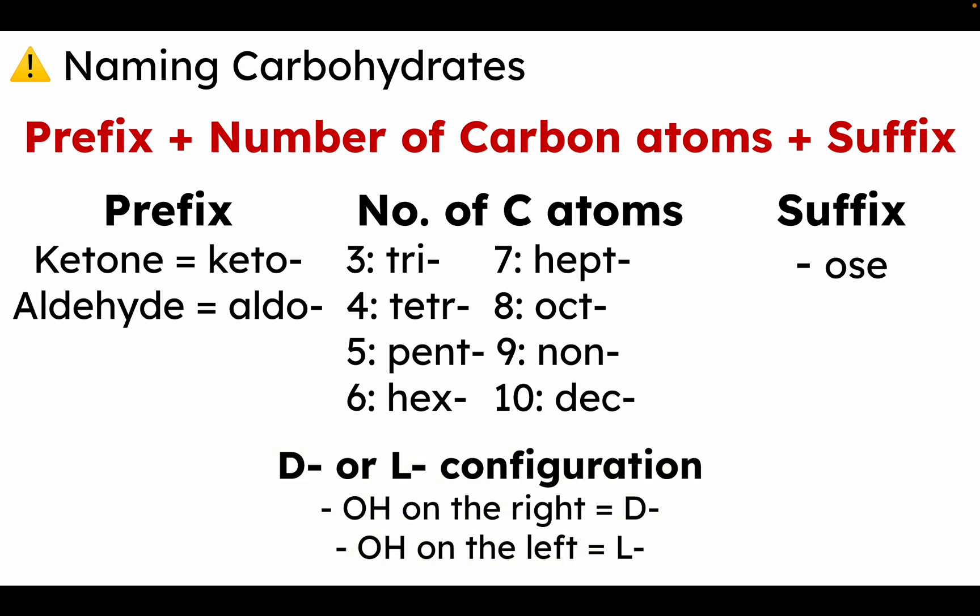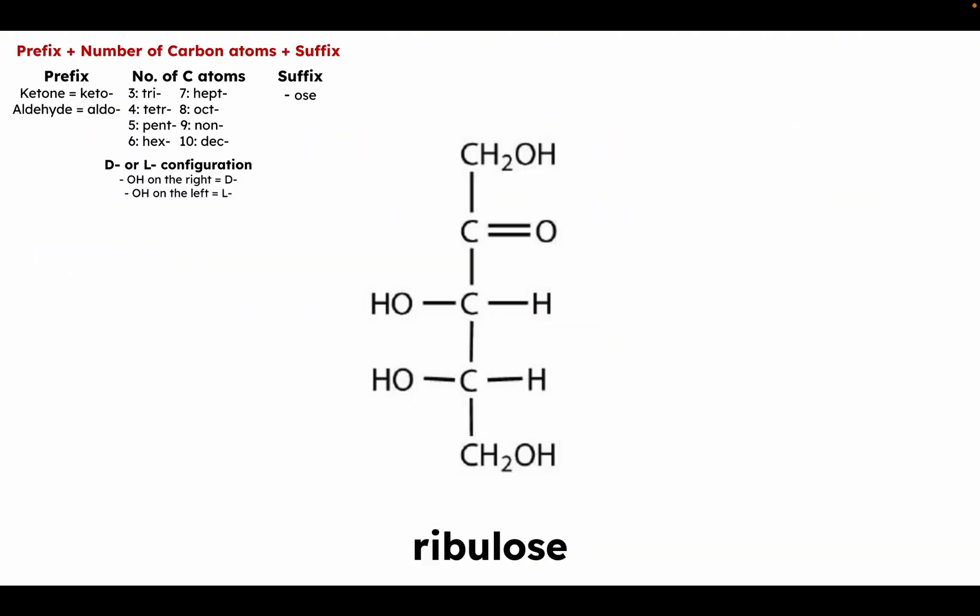To determine the D or L configuration, we look at the highest numbered chiral carbon. If the hydroxyl group on the highest numbered chiral carbon is on the right, this is a D sugar. If the OH on the highest numbered chiral carbon is on the left side, this would be an L sugar.